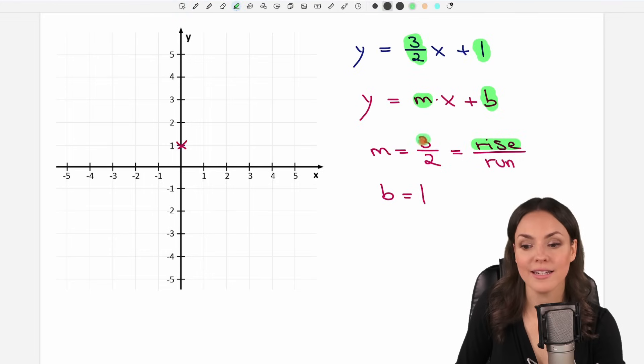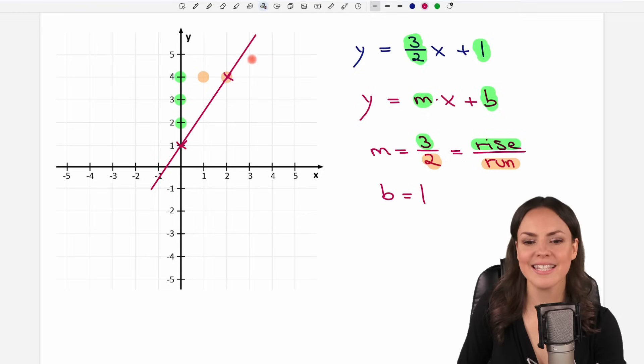So rise is the number here on top, it's the positive 3. So from our x we just drew here, we rise 1, 2, 3. And then the second number is our run. So it's a positive two. So from here we go positive two, we run positive two steps here. And where we end up there we put our second x. And now this is the second point of our line. Now we only have to connect these two lines. Let's try it. It should look like, yeah perfect, like this. And this is the line from our linear equation here.